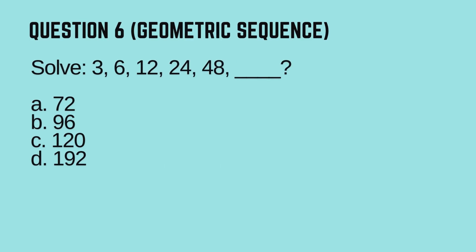Question 6. Geometric Sequence. Solve the sequence: 3, 6, 12, 24, 48, blank. Options: A-72, B-96, C-120, D-192. Timer starts now.